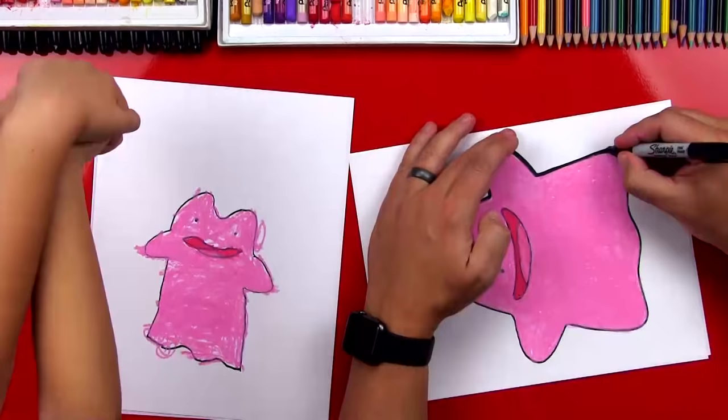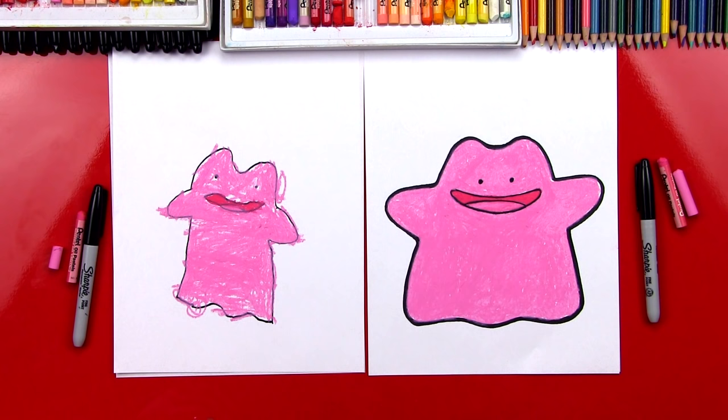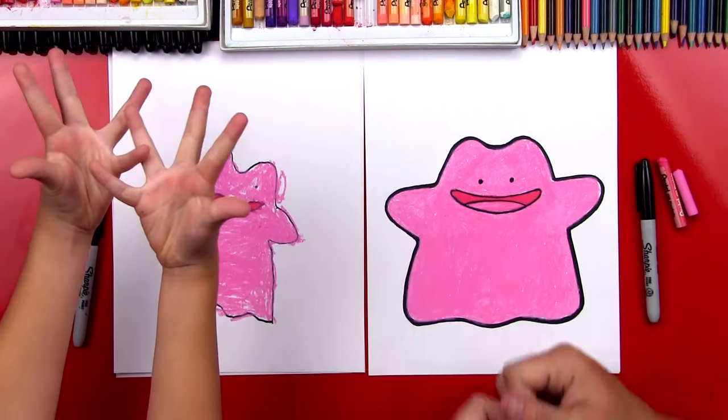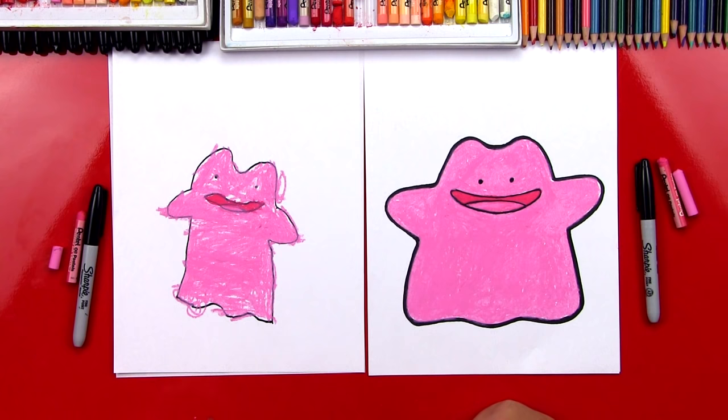Alright dude, we did it. We finished coloring Ditto. And that was a lot of pink, wasn't it? If your fingers are sore, you can open and close them and stretch them out. I really like Ditto when he turns into the other Pokemon because he's got those teeny little eyes. He can turn into every single Pokemon. That's a special power. I wish I had that power.